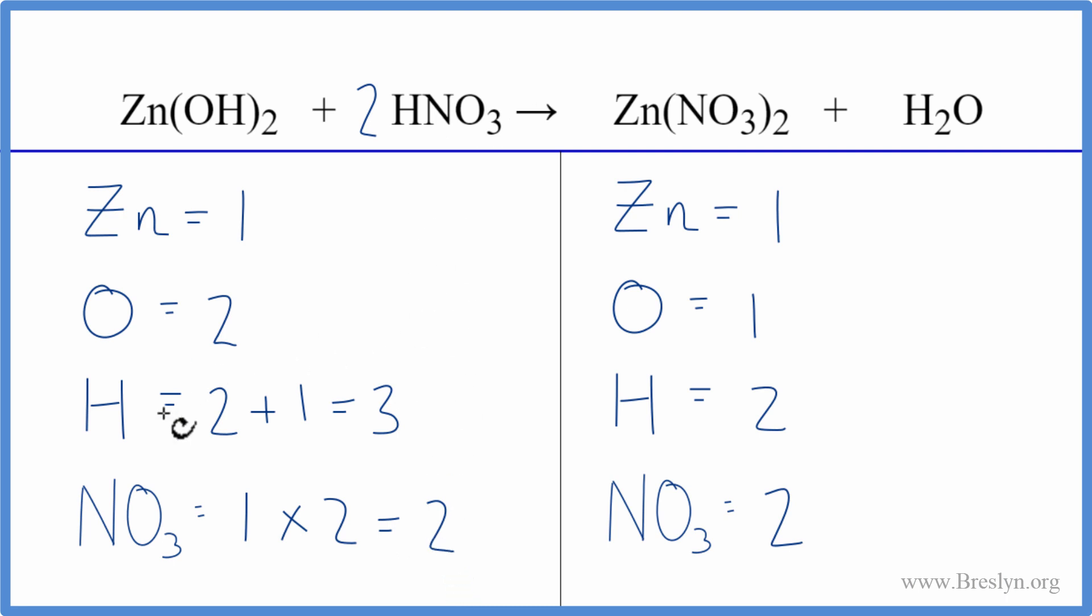And then we need to update the hydrogens. So we have two times one, that gives us two hydrogen atoms, plus one times two. So now we have four. We could fix our hydrogens—we have four here and two here—by putting a coefficient of two in front of the H₂O, and I think that'll fix the oxygens.